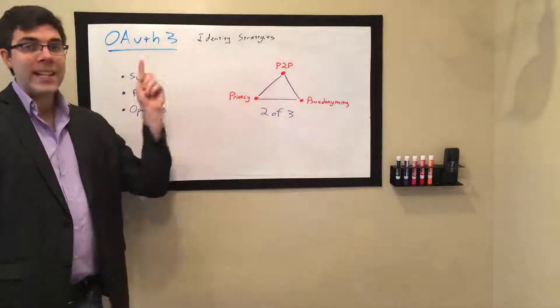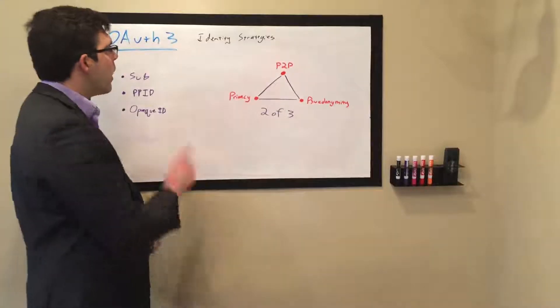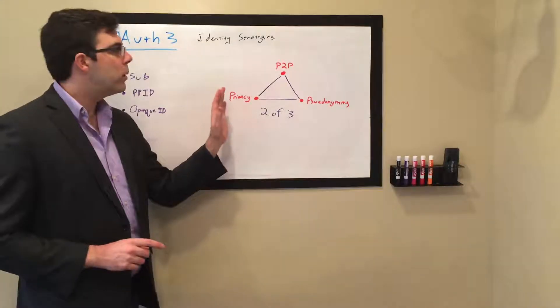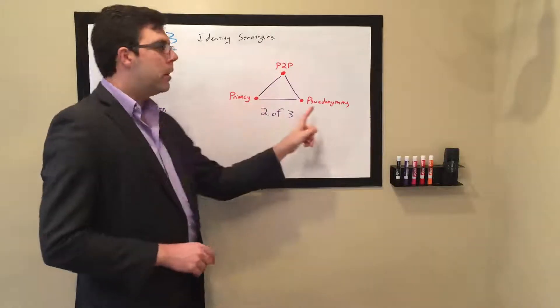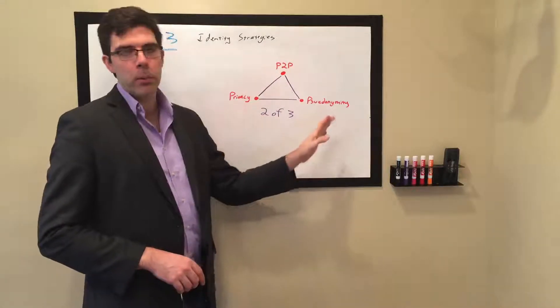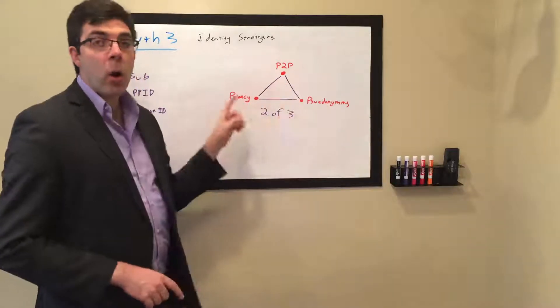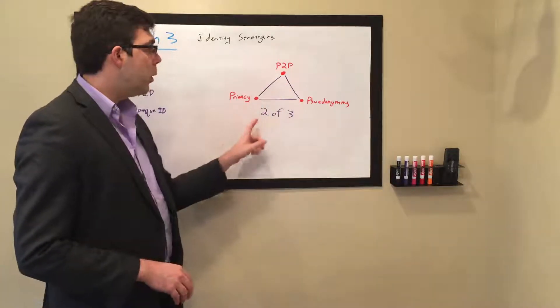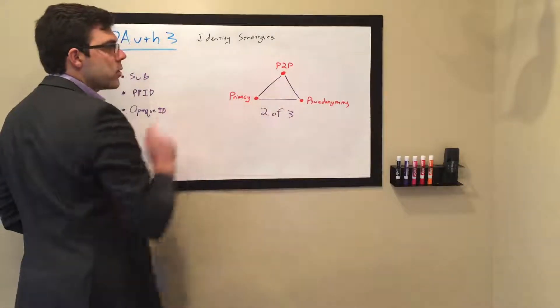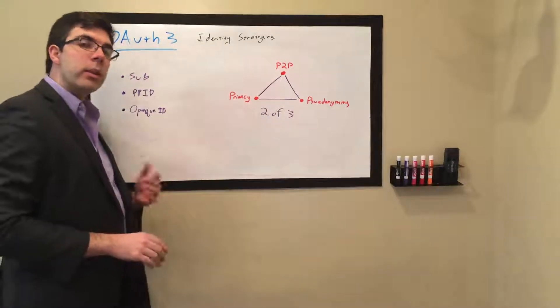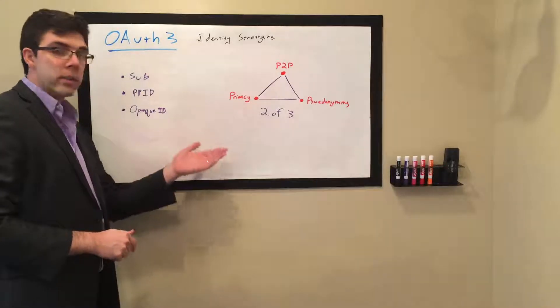Now I'm going to talk about OAuth 3 identity strategies. One of the purposes of OAuth 3 is to solve the pick 2 of 3 problem. So you can have peer-to-peer, privacy, or pseudonymity, which some people mistakenly term as anonymity, but you can't have all three at one time. So you pick 2 of 3. You'll notice there's three edges to this triangle representing the three possible strategies you can have in order to achieve the desired result. So here we outline the subject strategy, the PPID strategy, and the opaque ID strategy.